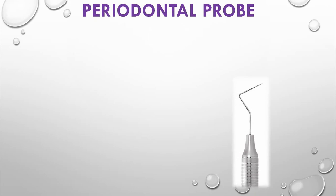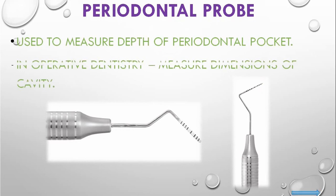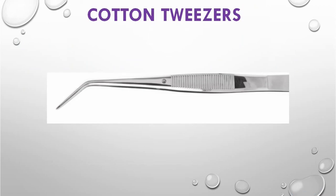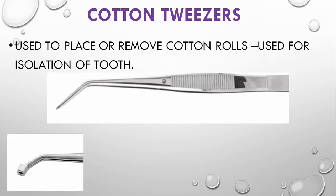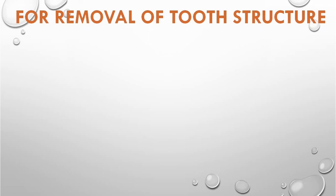The periodontal probe is similar to the explorer, but its tip is not sharp and it has markings on it. It is used to measure the depth of periodontal pockets and, in operative dentistry, to measure cavity dimensions. Cotton tweezers are basically a plier with angled tips, used to place or remove cotton rolls for isolation of teeth and to carry small items like cotton pellets to dry the teeth.